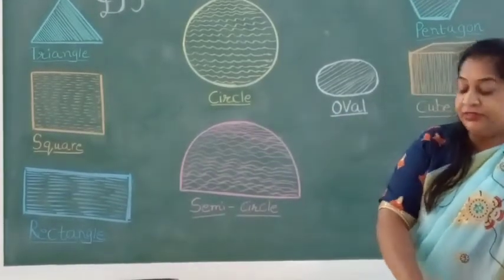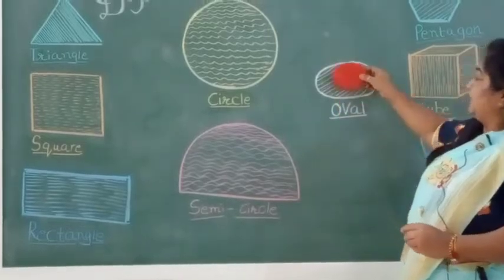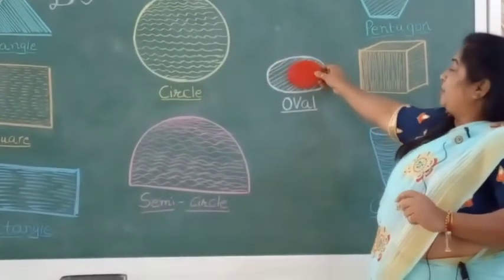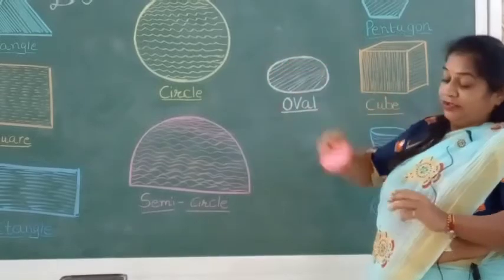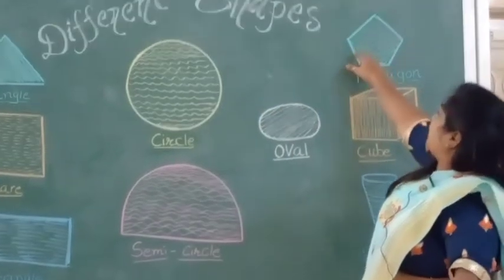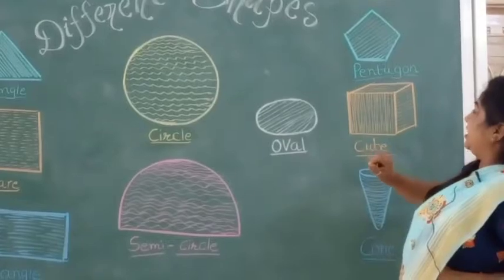After semicircle, there is a oval. Yes, you can see here. Example of oval is egg. Then this is pentagon. Pentagon has five sides.